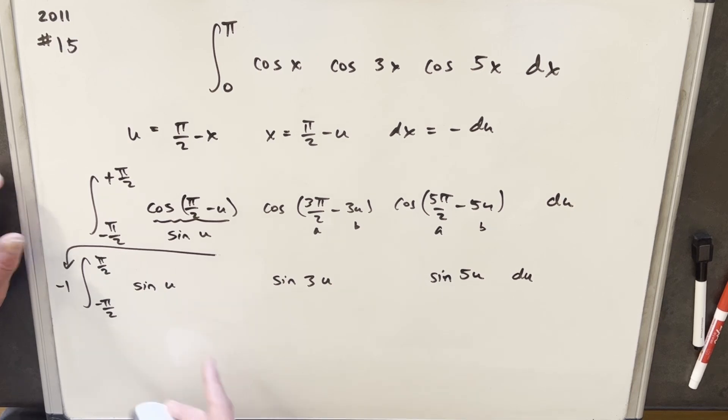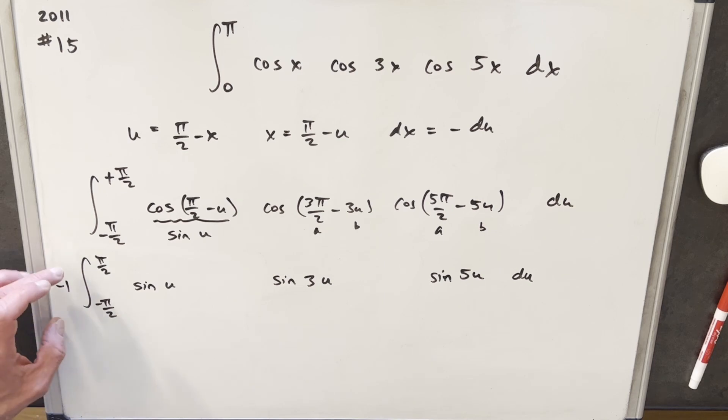So all we have left is sine u, sine 3u, sine 5u. And now we're actually pretty close, because we've got this symmetrical bound, and we can finish it off. So let's just look at one more property.